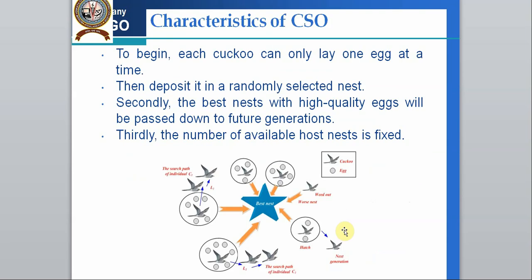The characteristics of the Cuckoo Search Algorithm are: first, each cuckoo can only lay one egg at a time and deposit it in a randomly selected nest. Second, the best nests with the highest quality eggs will be passed down to future generations. Third, the number of available host nests is fixed.